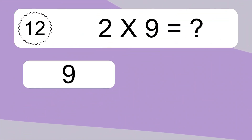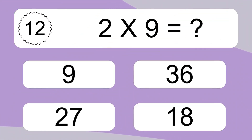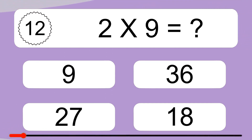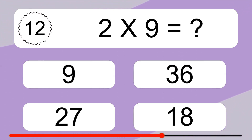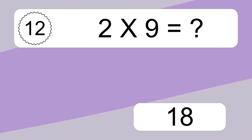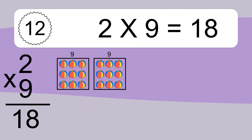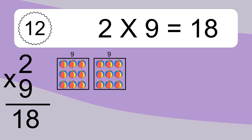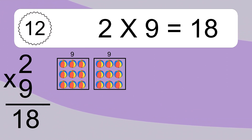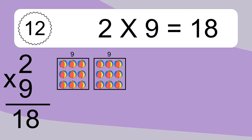2 times 9 equals what? 2 times 9 equals 18. We have 2 boxes, and each box has 9 colorful balls inside. If you count all the balls in all the boxes together, you will have 2 times 9 balls. This equals 18 balls.